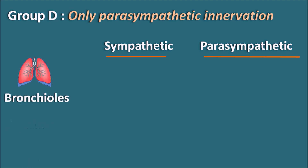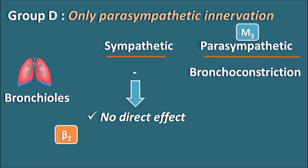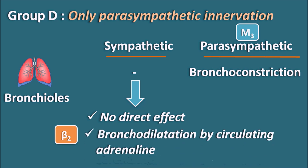One organ in Group D is the bronchioles. At the bronchioles, the sympathetic system has no direct effect, but the parasympathetic system produces bronchoconstriction mediated by M3 receptors. Still, the sympathetic system can produce bronchodilation — not as a direct effect, but because the bronchioles express beta 2 receptors on which circulating adrenaline can act. Adrenaline released from the adrenal medulla enters the blood and reaches the bronchioles, where it acts on beta 2 receptors to produce bronchodilation.